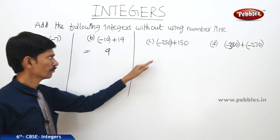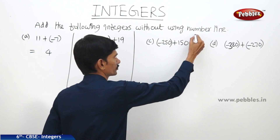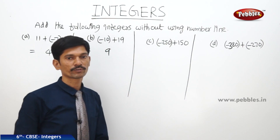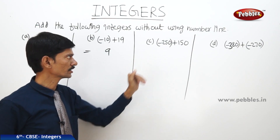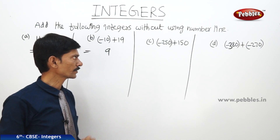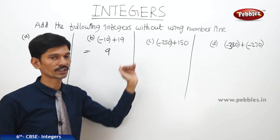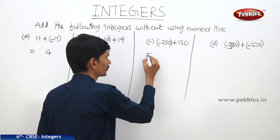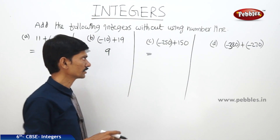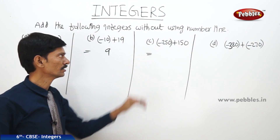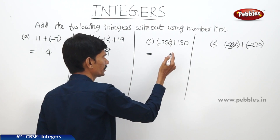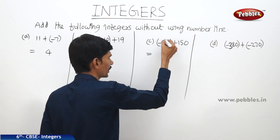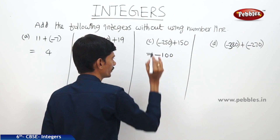Next, (-250) plus 150. Here a negative integer and a positive integer are added. We subtract the smaller from the bigger: 250 minus 150 is 100. The bigger number 250 has a minus sign, so we take minus 100.